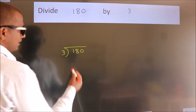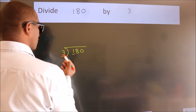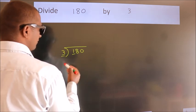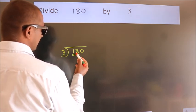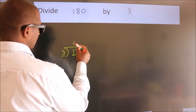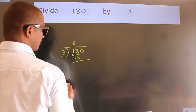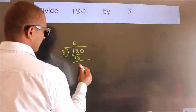Next, here we have 1, here 3. 1 is smaller than 3, so we should take 2 numbers, 18. When do we get 18? In the 3 table: 3, 6, 18. Now we should subtract. We get 0.